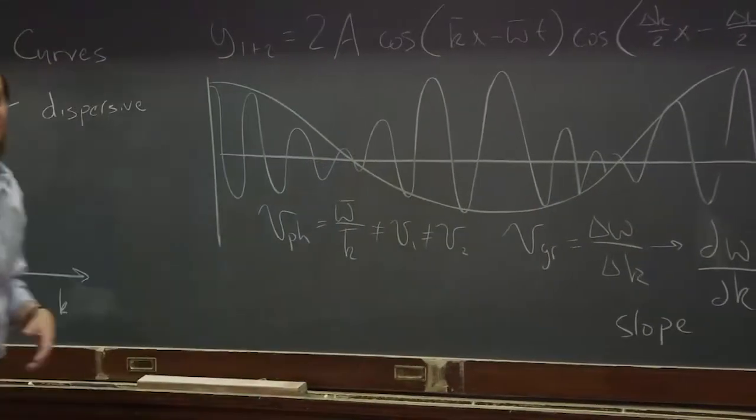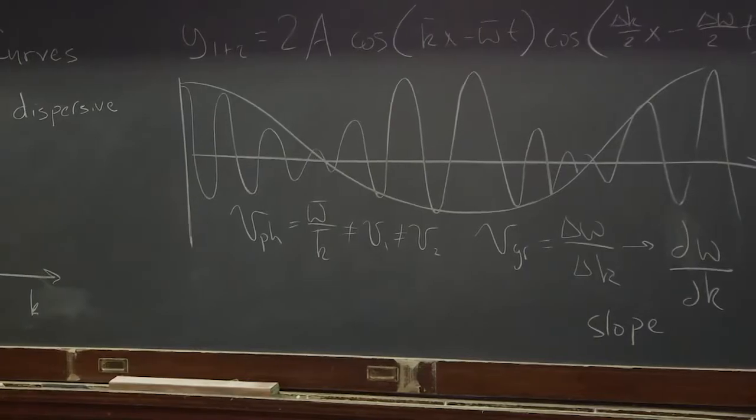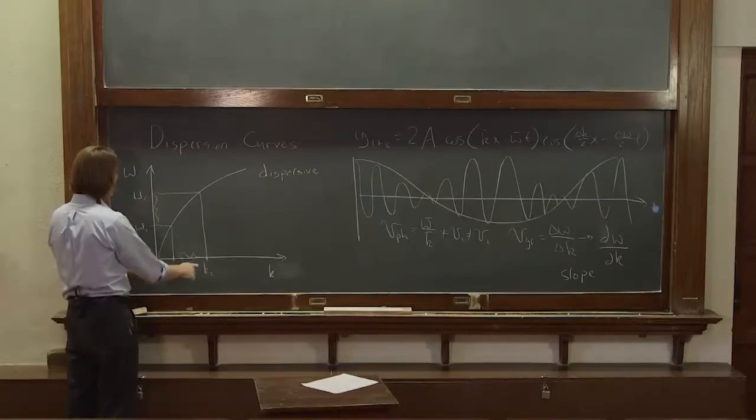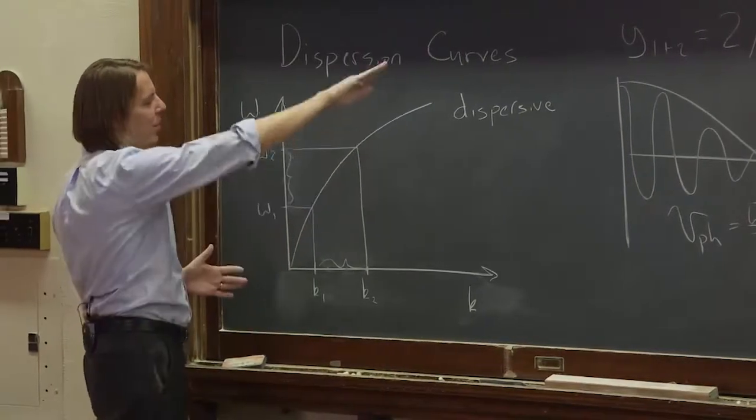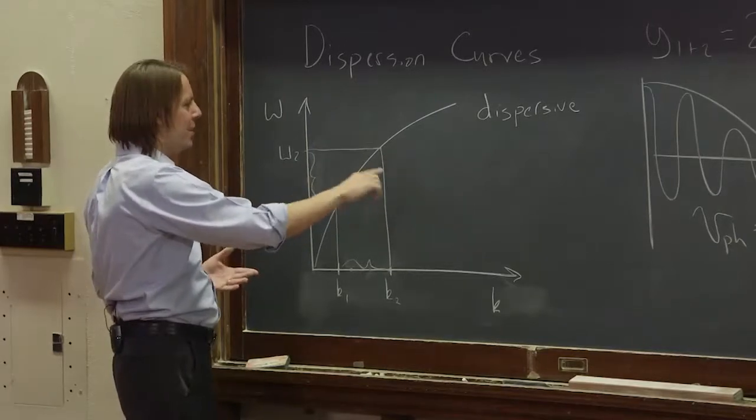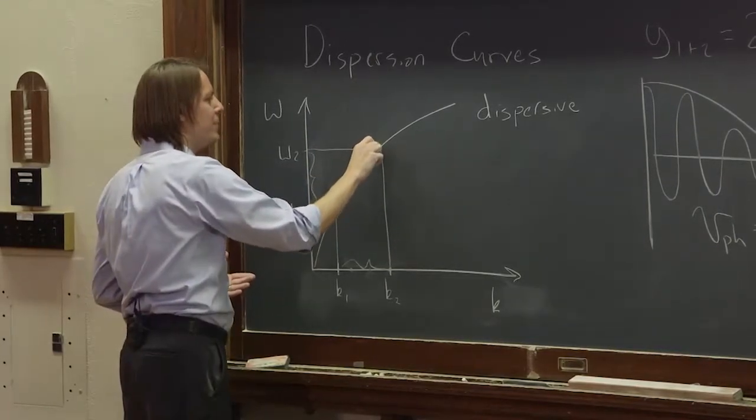There's really two ways you can get a velocity off of these graphs. It can be between two different points, and you can just take this height over that height, that height over that height, or you can take the slope of the curve. And when it was a line, they were all the same. But now that we have a curve, at any point, you could define two different velocities.